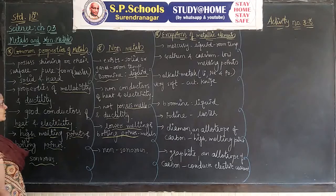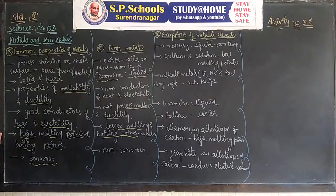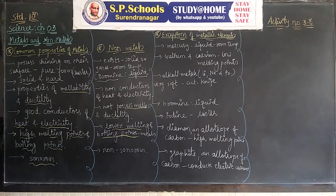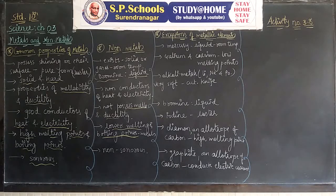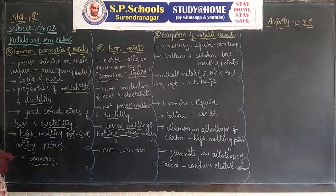In the case of non-metals: non-metals normally exist as solids or gases at room temperature, while bromine is liquid at room temperature. Non-metals are non-conductors of heat and electricity, do not possess malleability and ductility, have lower melting and boiling points, and are non-sonorous.